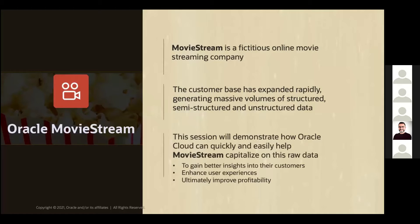So what are we doing today? We start with the premise: we are MovieStream. MovieStream is a fictitious online movie streaming company, and their customer base has really been growing. They generate tons of structured and unstructured data. What we're going to do is demonstrate how you can use Oracle Cloud and Autonomous Database to capitalize on that data — better understand your customers, better understand what they're doing, make a better user experience for them, and ultimately improve profitability for MovieStream.